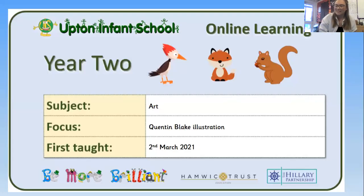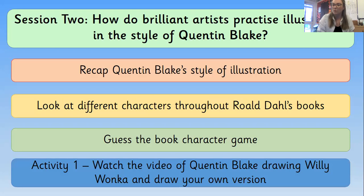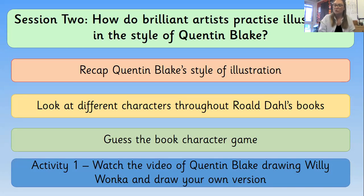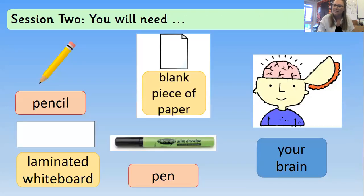Hi everybody and welcome to Tuesday's art lesson. I hope you enjoyed yesterday's and you're ready to go again for today. We're going to think about what Quentin Blake's style of illustration is like again, look at some different characters throughout Roald Dahl's books, play a guess the book character game, and then draw our very own version of Willy Wonka. You'll just need blank paper — no lined paper today — so you might need to pause me now to go and get some.